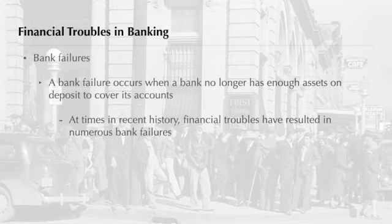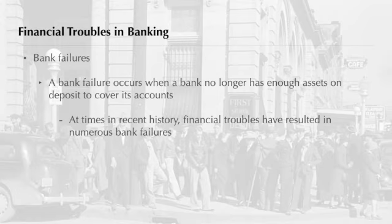Loan defaults and other financial worries led to more bank failures in the 1980s than in any decade since the Great Depression. A bank fails when it no longer has enough assets on deposit to cover its accounts. Between 1980 and 1985, the annual number of FDIC-insured banks that failed rose from 11 to more than 100. Added to this total are the numerous near-failures of banks in serious financial trouble.